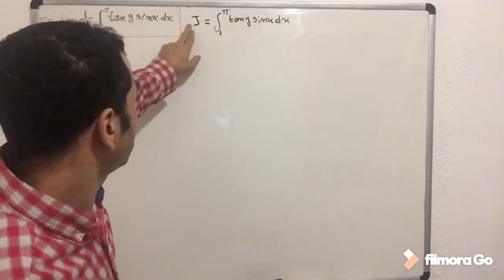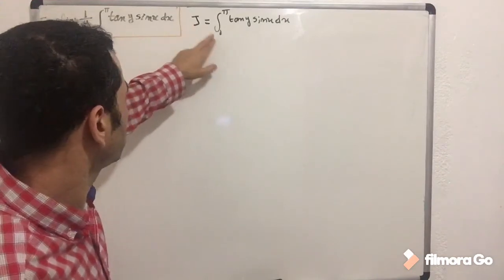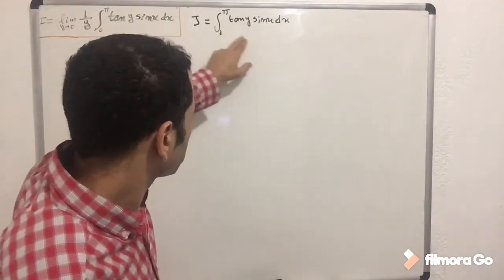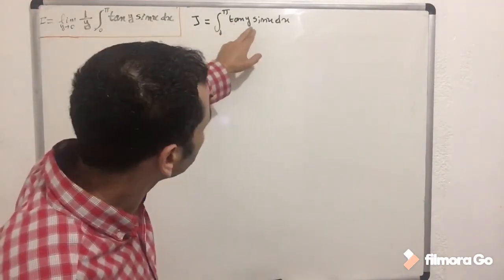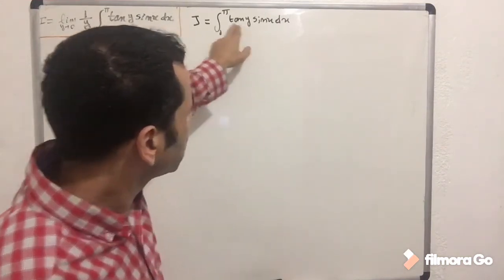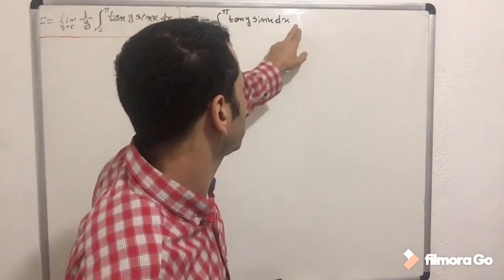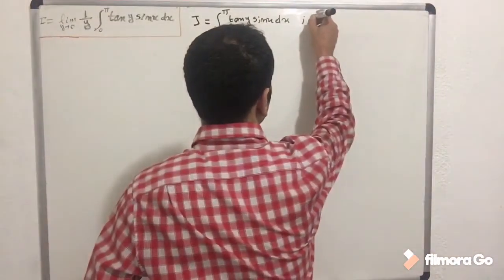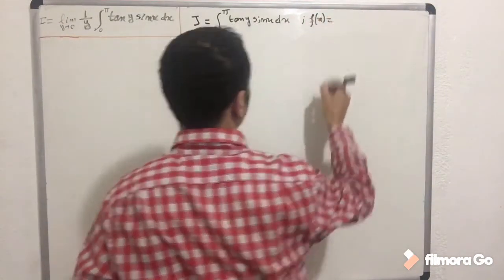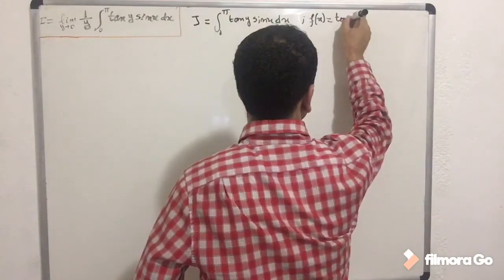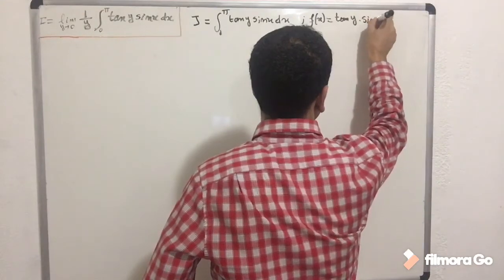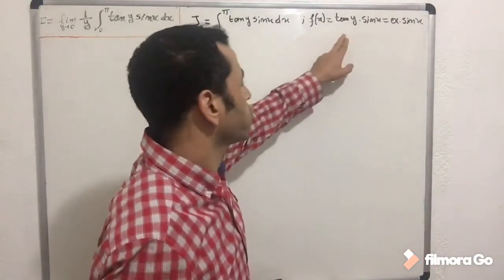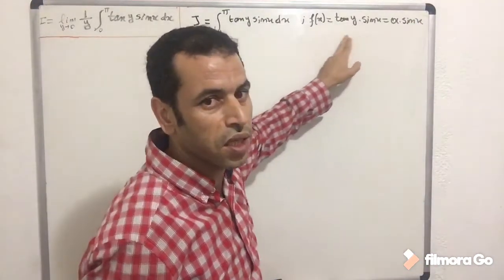Now let's calculate this integral. If you look inside, you will see tangent(y)·sin(x) dx. This function depends on x, not on y. So let's define f(x) = tangent(y)·sin(x), where we set a = tan(y), since tangent(y) is a constant with respect to x.